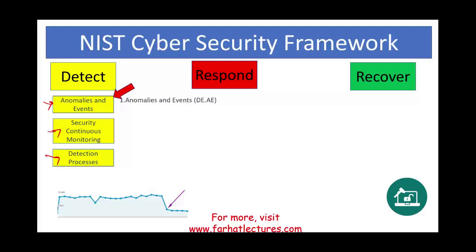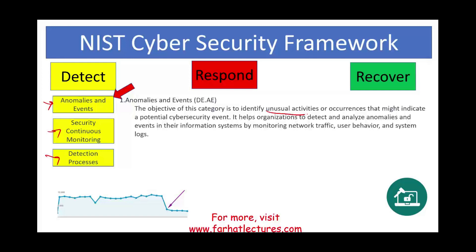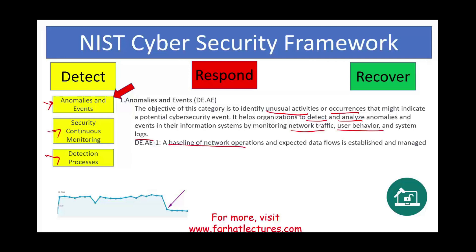Starting with anomalies and events — what are they? The objective of this category is to identify unusual activities or occurrences that might indicate a potential cybersecurity event, such as someone trying to invade your system, place a virus, or place malware. It helps the organization detect and analyze anomalies and events by monitoring the network, user behavior, and system logs. One subcategory involves establishing a baseline for network operations and expected data flows. For example, if your website traffic is normally around 10,000 to 12,000 and suddenly it drops, that is an anomaly. You want to know why — are users being blocked, are you being hacked, is a page down? By knowing what your normal traffic should be, you can spot when something is wrong.